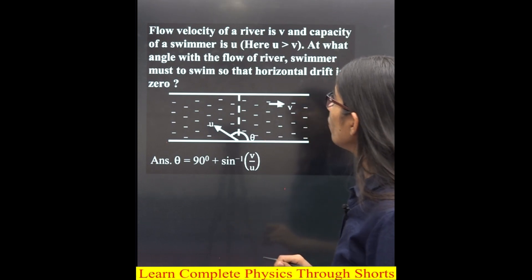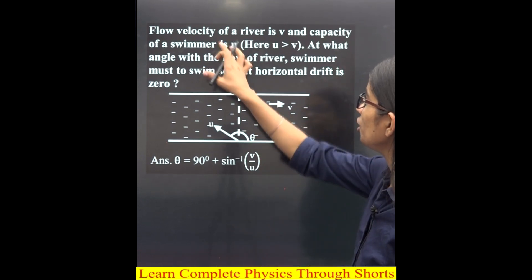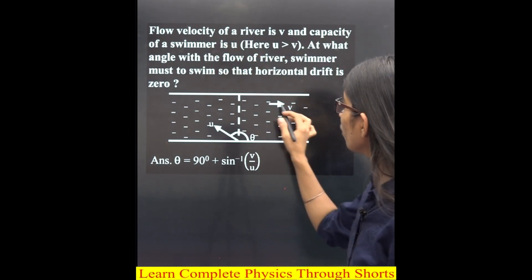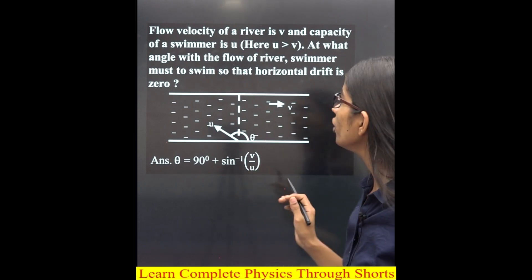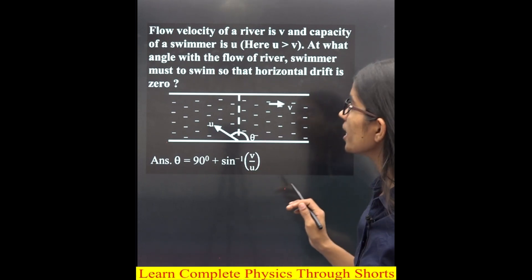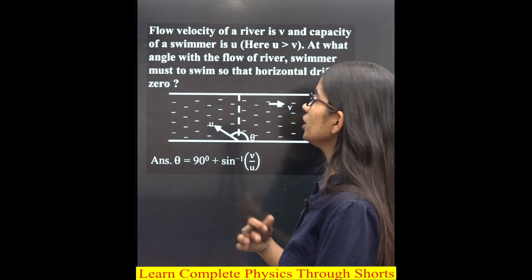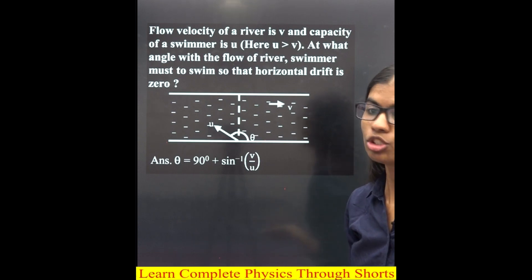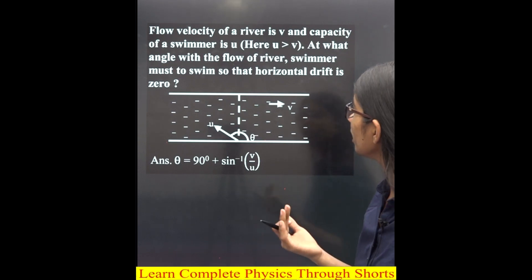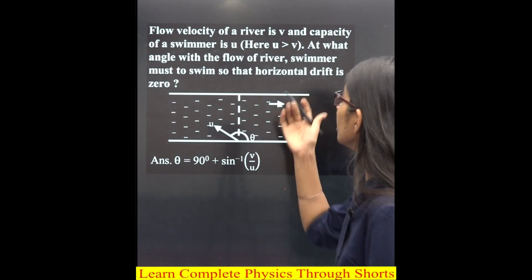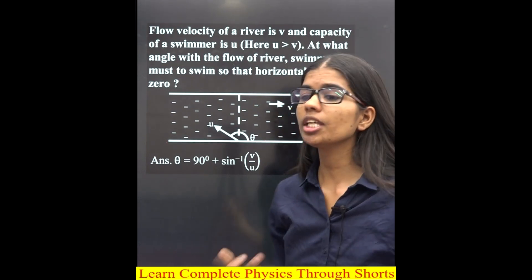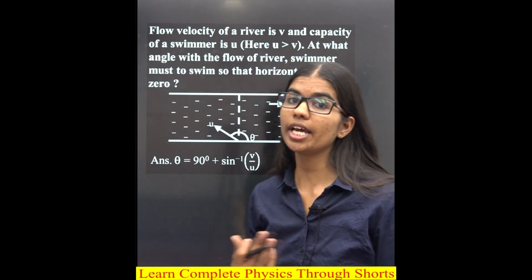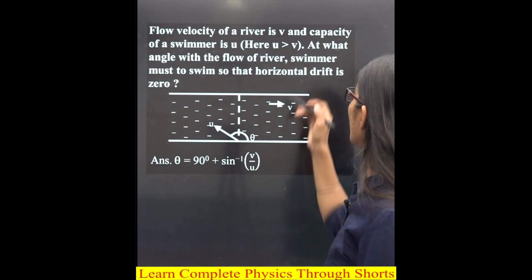The flow velocity of a river is V and the velocity of a swimmer is U. The swimmer's speed is U, and U is greater than V — the swimmer's capacity is greater than the velocity of the river.